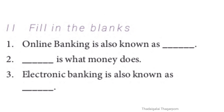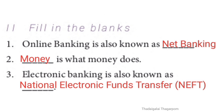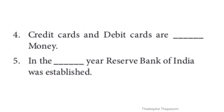Section 2: Fill in the blanks. Q1: Online banking is also known as — Answer: Net banking. Q2: Dash is what money does — Answer: Money. Money is what money does. Q3: Electronic banking is also known as — Answer: National Electronic Funds Transfer (NEFT).